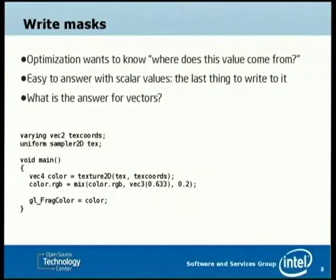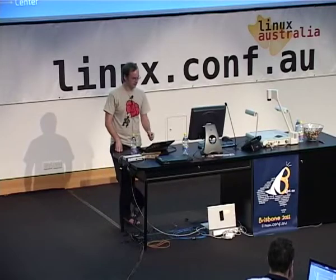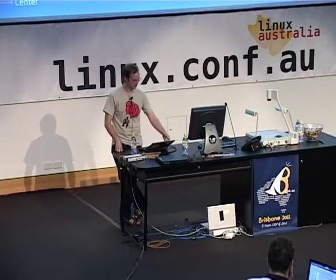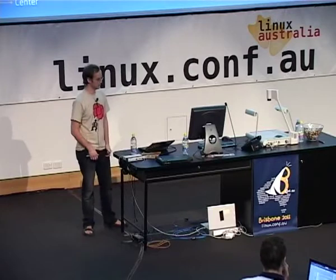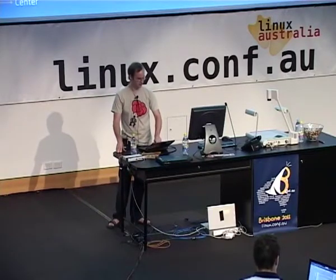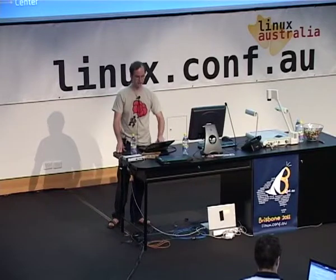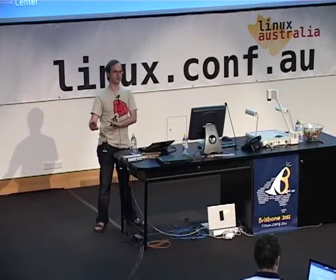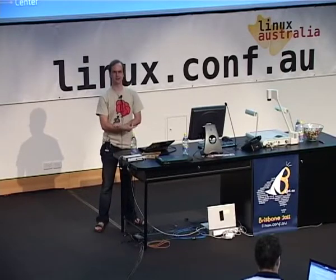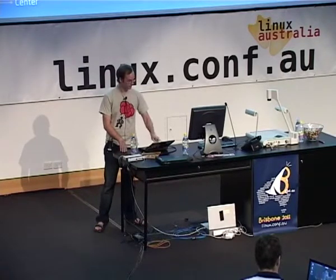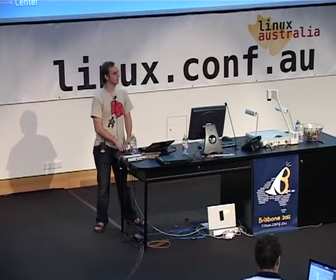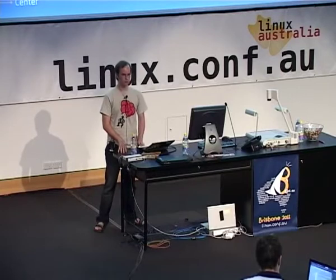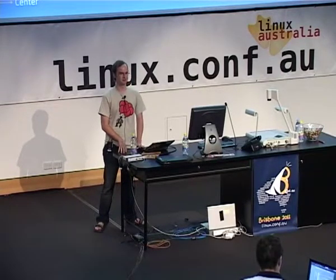In all optimization passes, you want to know where the value you're looking at came from — look up in the program to see where it was defined. That's easy for scalars: look at the last thing that wrote to it. For a vector where you can update one component at a time, it gets complicated. For example, I have a color from a texture, then I updated the red, green, and blue with a mixture of gray to desaturate — this shader actually came from GNOME Shell — and then I set my result to that. So if I want copy propagation into my result, where did the color come from? The first instruction, the second, or both?